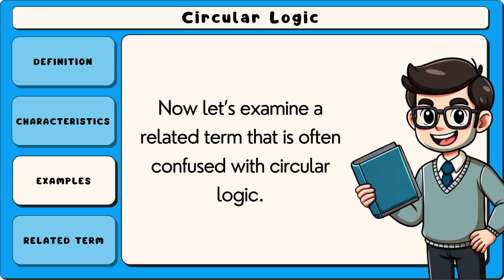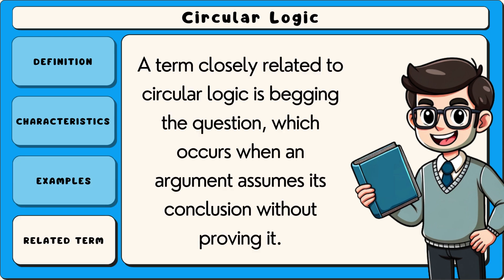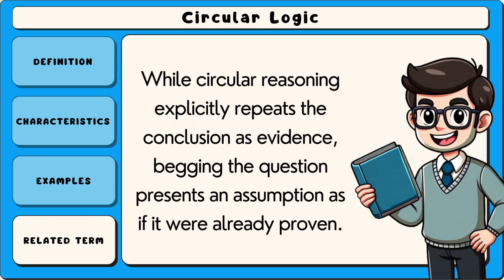Now let's examine a related term that is often confused with circular logic. A term closely related to circular logic is begging the question, which occurs when an argument assumes its conclusion without proving it. While circular reasoning explicitly repeats the conclusion as evidence, begging the question presents an assumption as if it were already proven.